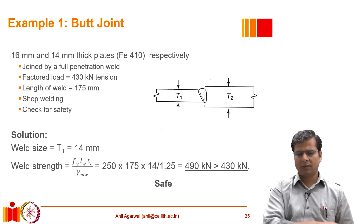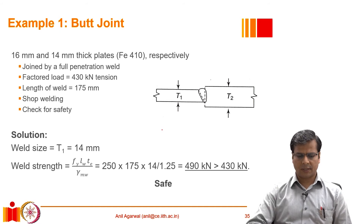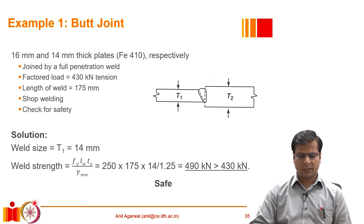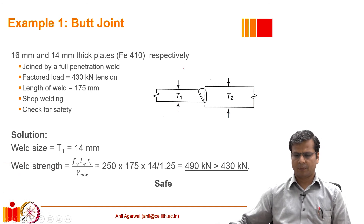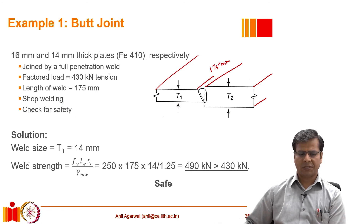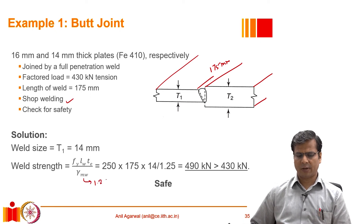Here is an example: we join two plates, one 16 mm thick and the other 14 mm thick, using a full penetration weld. A factored load of 430 kN is applied in tension, and the length of the weld is 175 mm — that is, the dimension in the direction perpendicular to the screen. It is mentioned that it is a shop weld, therefore γMW will be 1.25. We need to check whether this weld can resist this load.